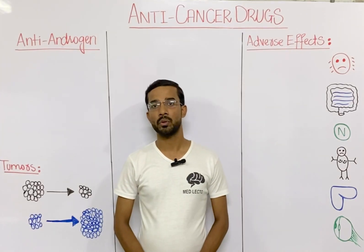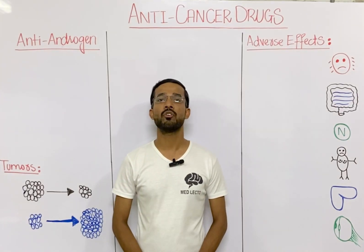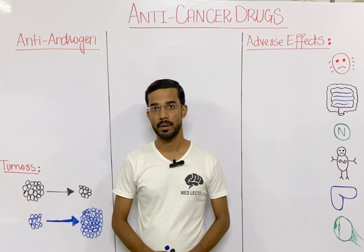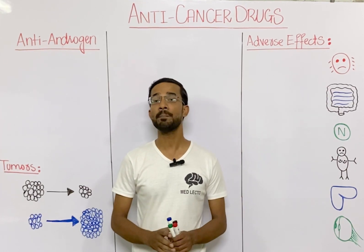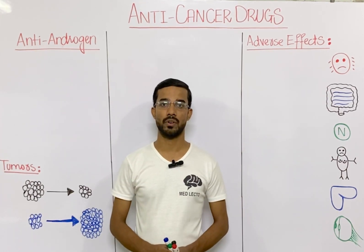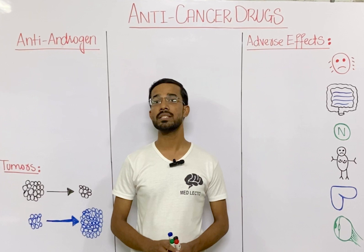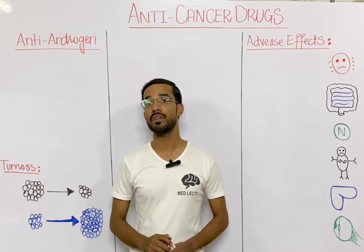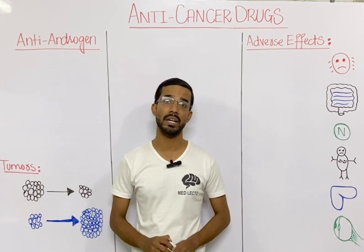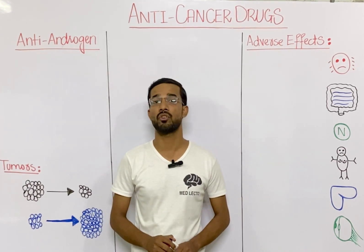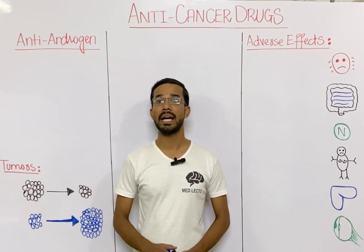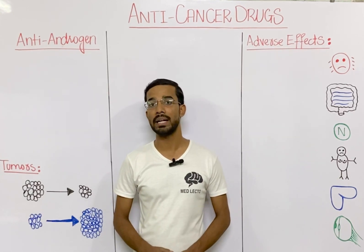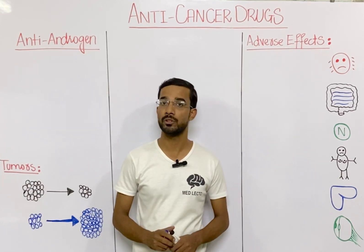Welcome to Medillacto. Today we are going to discuss anti-androgen drugs. Basically these are a subcategory of the anti-cancer drugs. In this lecture we will discuss four most important anti-androgen drugs: Flutamide, Nilutamide, Enzalutamide, and Bicalutamide.